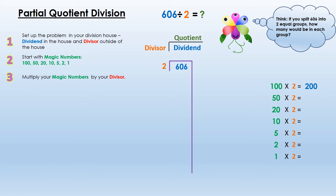Now I'll solve for the products of each magic number times 2: 100 × 2 = 200; 50 × 2 = 100; 20 × 2 = 40; 10 × 2 = 20; 5 × 2 = 10; 2 × 2 = 4; and 1 × 2 = 2.